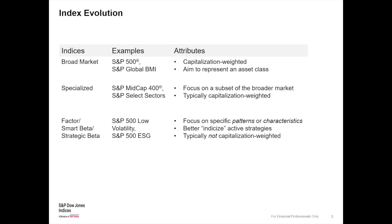Generation 2 indexing went beyond a broad market-cap-weighted index to specialized indices — things like mid-cap and small-cap stock indices, sectors, size and style indices. We start chopping the big market-cap indices down into smaller pieces, but usually still weighting by market cap. Generation 3, where we've been in the last decade or so, gets more specialized — building indices that focus on specific patterns, characteristics, or return patterns to address very specific risks.